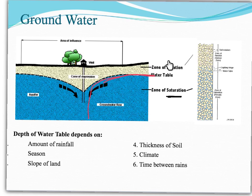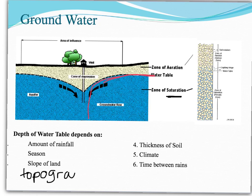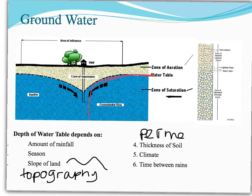The depth of your water table can actually change depending on quite a few different things. It can change depending on how much rainfall you get that day, that month, that year. What season it is, which can ultimately determine how much rainfall you're getting. The slope of the land or the surface topography — topography is like the lay of the land. Also, thickness of soil and what the soil is made of — dirt, rocks, pebbles, sand. Is it permeable? So the permeability of the soil matters.